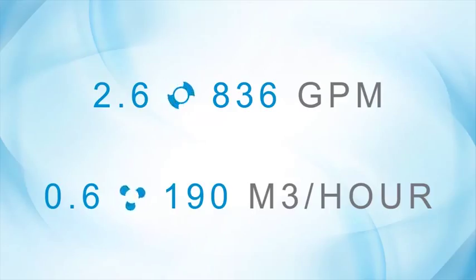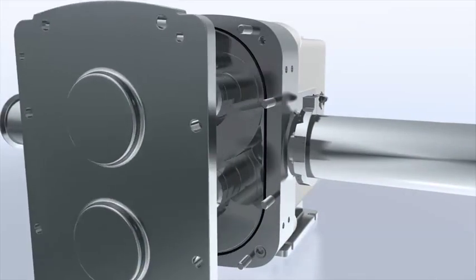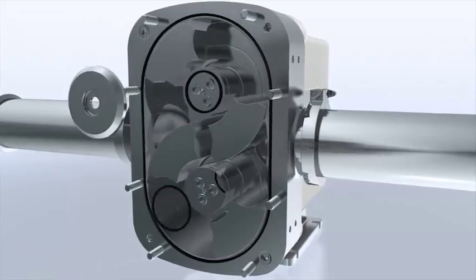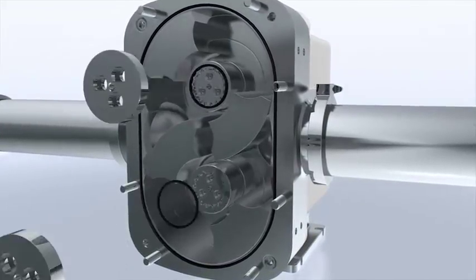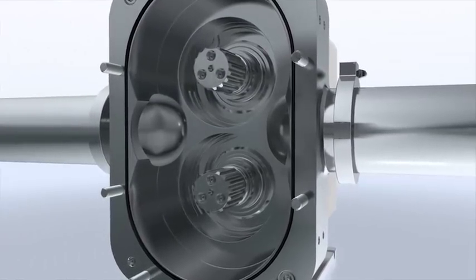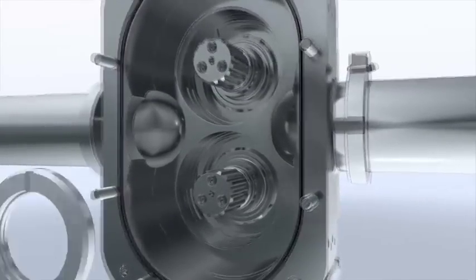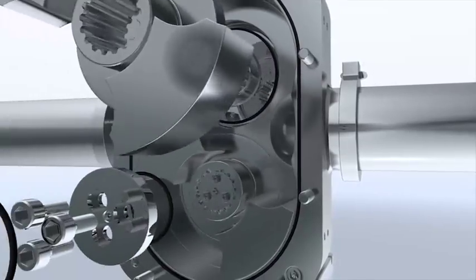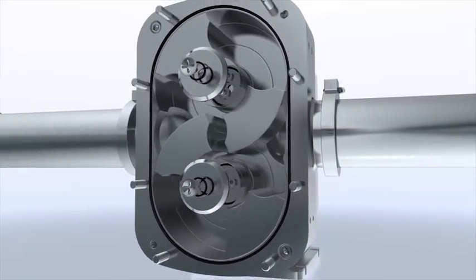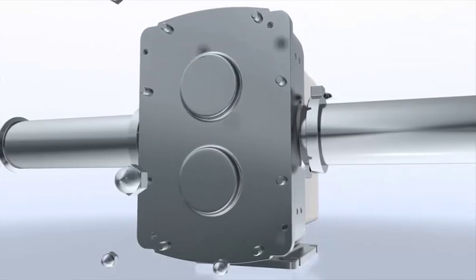For ease of maintenance and reduced pump downtime, the front loading seal design enables seal inspection and maintenance without disconnecting the pump from your process line. External shimming of the rotors back and front face clearances can also be performed while the pump is in line, reducing further downtime.